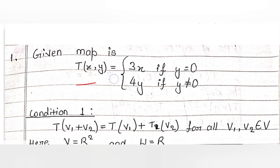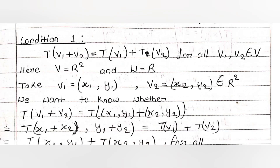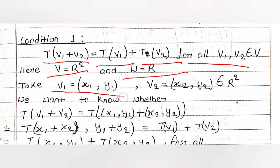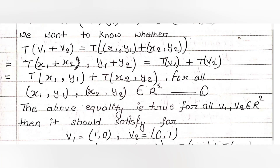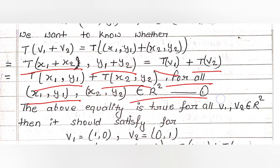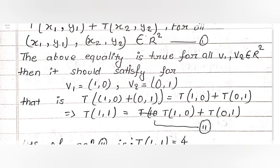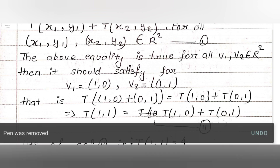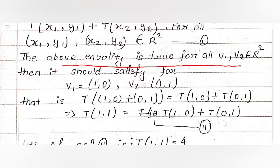The given map is T(x, y) = 3x if y = 0, and 4y if y ≠ 0. For condition 1, we need T(v1 + v2) = T(v1) + T(v2) for all v1, v2 in V, where V = R² and W = R. Take v1 = (x1, y1) and v2 = (x2, y2) in R². We want to verify whether T(v1 + v2) = T(x1+x2, y1+y2) equals T(x1, y1) + T(x2, y2) for all such points — call this Equation 1.